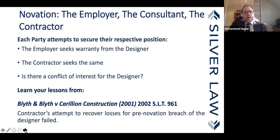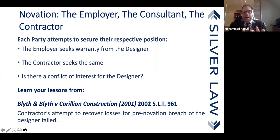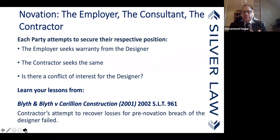The next important point concerns the fate of performances that occurred before the new party comes into the picture. Under Contract 1, Party A was liable to Party B. Now Party C — the contractor — comes in. What is the position of the contractor vis-à-vis the professional? As against the client, what is the client's position if something goes wrong? Does it go to the original professional or to the contractor?